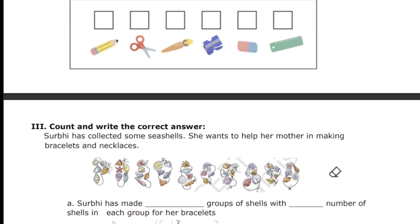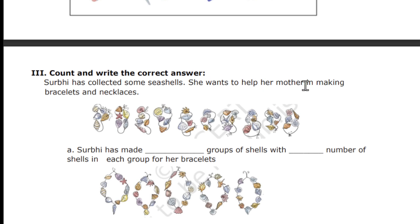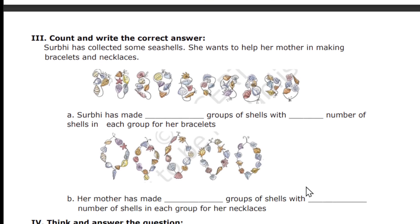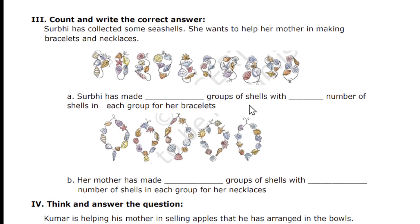The next one is exactly a book-based question: 'Surabi has collected some seashells and wants to help her mother make bracelets and necklaces.' Fill in: Surabi has dash groups of shells with dash numbers of shells in each group for her bracelets. Count and write the answer — 1, 2, 3, 4, 5 — and count how many shells are in each group. Also fill in: her mother made dash groups of shells with dash number of shells in each group for her necklace. This is a 5-mark question and easy since it's directly from your book.